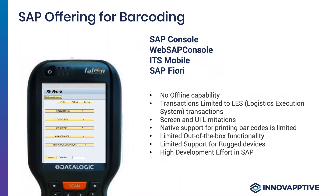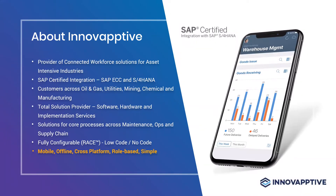Let's look at where Innovaptive fits into this landscape and what we bring to the table. Innovaptive is a provider of connected workforce solutions for asset-intensive industries. We specialize in supply chain management, warehouse management, and enterprise asset management or plant maintenance. We are a total solution provider — we provide software that integrates seamlessly to your SAP system, and it is SAP certified for ECC as well as S4 HANA.